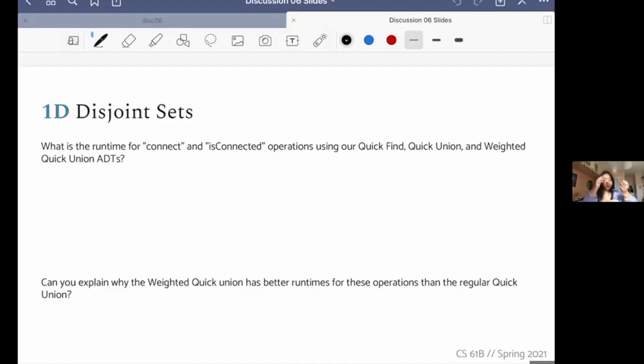And so we want to know the runtime of our connect and is connected operations for each of these. So first we have Quick Find. And so for the Quick Find connect, let's think about it. Imagine we have two sets, right? And we want to connect them. And so all the items in the first set are in set one. And so we can imagine items zero, one, two, three, four, five, six. There are six items.